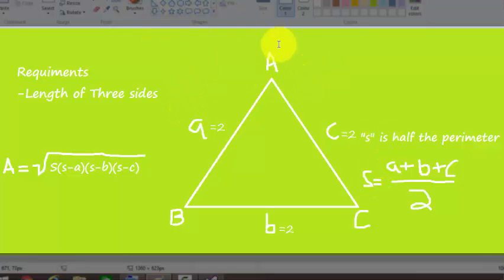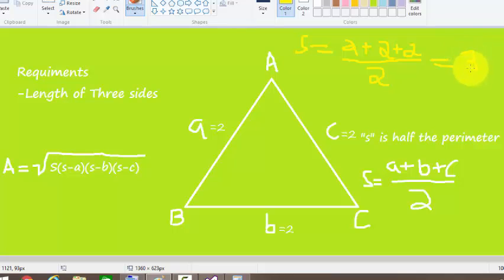First we will calculate s. S equals 2 plus 2 plus 2 divided by 2. Now we will put all these values in the formula in order to calculate the area. S is 3, so we have 3 minus 2.